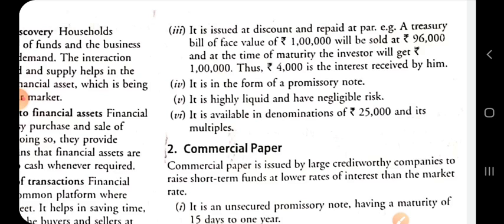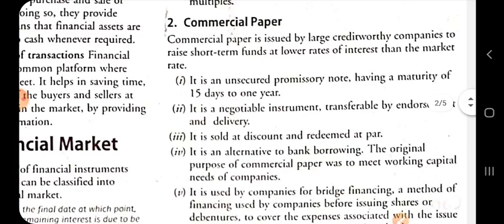The second instrument of the money market is commercial paper. Commercial paper is issued by large credit-worthy companies to raise short term funds at lower rates of interest than the market rate. The rate of return on the commercial paper is very low as compared to the market rate.